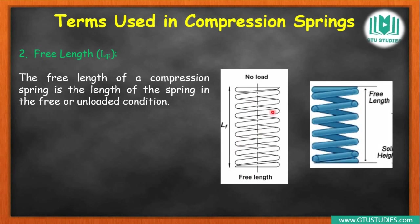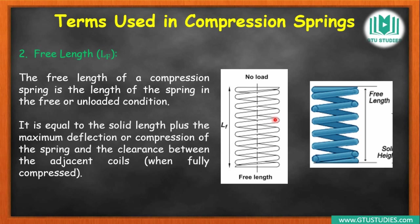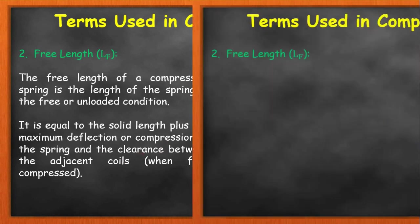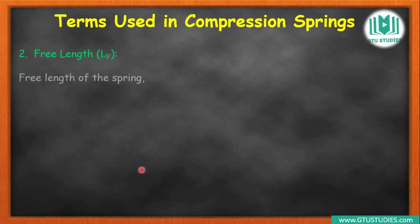Suppose we already found the solid length. Then we extend it, and a gap is generated between each coil. So from solid length to free length, some deflection occurs. The maximum deflection that can happen — we take that, add it to the solid length, and also add the clearance between each coil. The sum of these three gives us free length: solid length plus maximum deflection plus clearance.